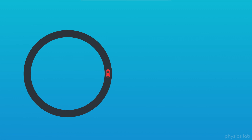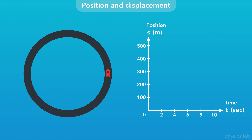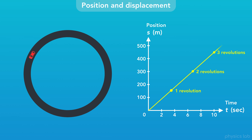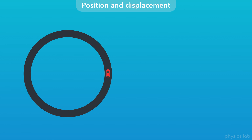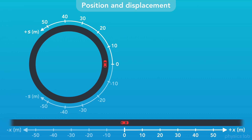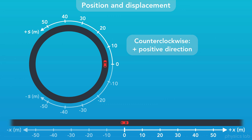We can also visualize things by graphing the circular position of the car over time. After one revolution around this track, the position keeps increasing — it's like the car is driving on an infinite straight road. Like with linear motion, we always define a positive and negative direction when we set up an axis. For circular motion, counterclockwise or anticlockwise is considered the positive direction, and clockwise is considered the negative direction.